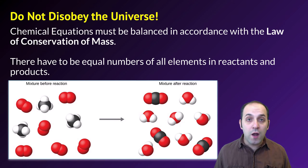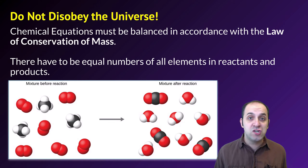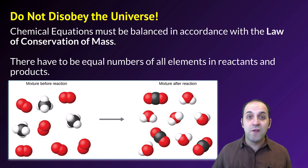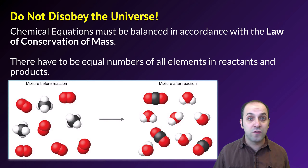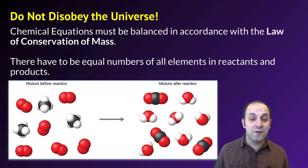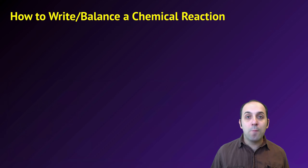Even if we have more than one of these substances participating in the reaction, the reactants still react according to the ratios set up in the balanced equation. For example, three methane molecules reacting with six oxygen molecules produces three CO₂ and six H₂O — it's still balanced and still according to that initial ratio established by the coefficients.